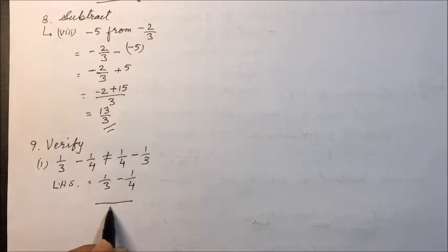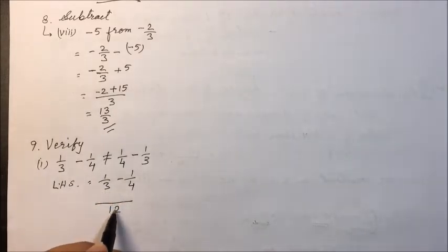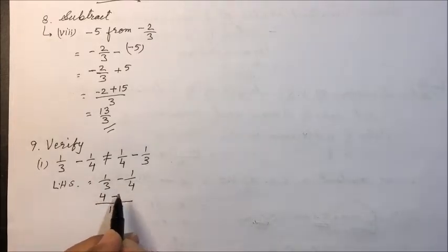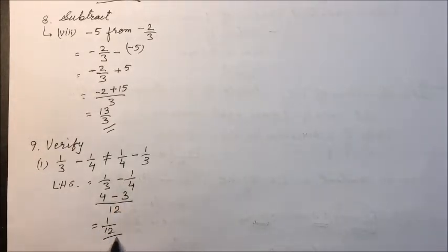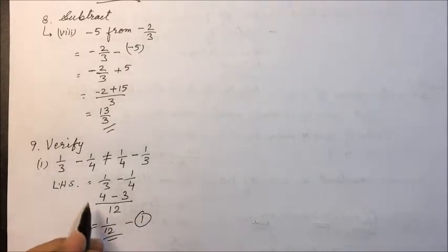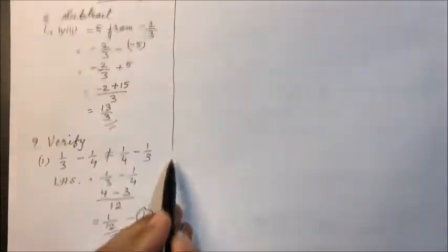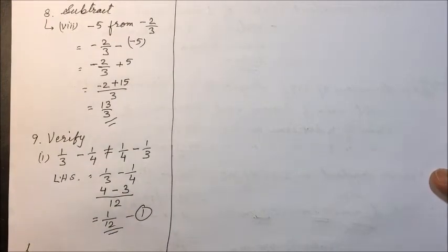Taking the LCM, which is 12, we get 4 minus 3 in the numerator, which gives 1 upon 12. This is our left hand side result. Now we take the right hand side.